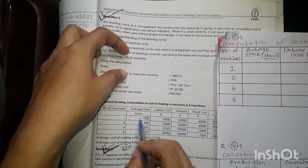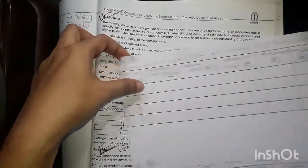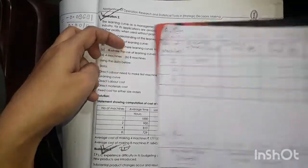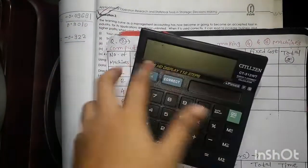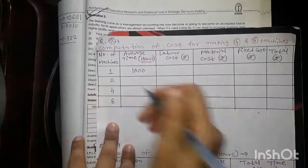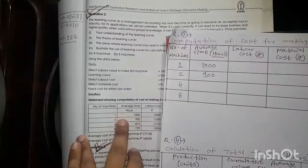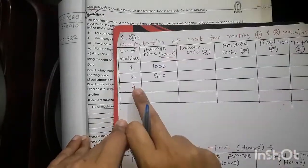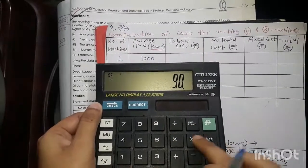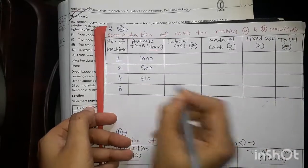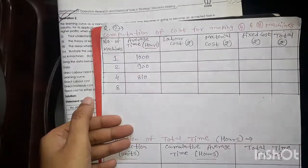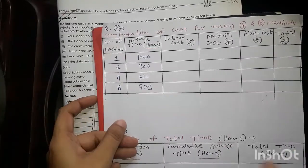Now, hours. We have to record hours. Here 1000 hours they have given us. So we will record 1000. Now we will apply this rate. This learning curve rate we will apply. So 1000 multiplied by 90 percent, it comes to 900. After that next, we have to go for 4th machine or 4 machines. 900 we got. On this now we apply 90 percent. That is 810. Next, 810 multiplied by 90 percent is 729.